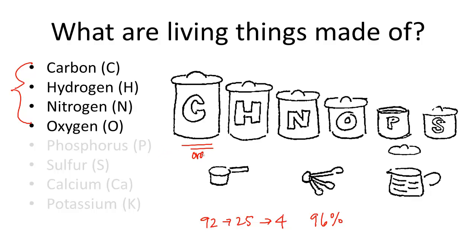And molecules containing carbon are called organic molecules. So the last 4% is made up of phosphorus, sulfur, calcium, potassium, and a few other elements.